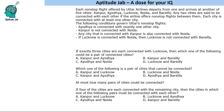The following conditions are given. First, Ayodhya is connected with exactly one other city. Second, Kanpur is not connected with Noida. Third, any city that is connected with Kanpur is also connected with Noida. Fourth, if Lucknow is connected with Noida, then Lucknow is not connected with Bareilly. Now we have questions based on these conditions, and some additional conditions are presented in the questions as well.